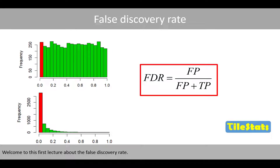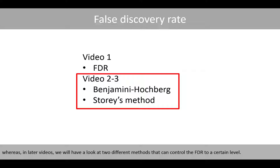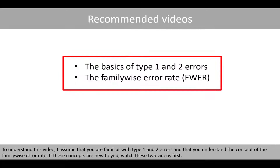Welcome to this first lecture about the false discovery rate. In this first video, we'll try to understand the concept of the false discovery rate, whereas in later videos we'll look at two different methods that can control the false discovery rate to a certain level. To understand this video, I assume you are familiar with type 1 and 2 errors and the concept of the family-wise error rate. If these concepts are new to you, watch these two videos first.